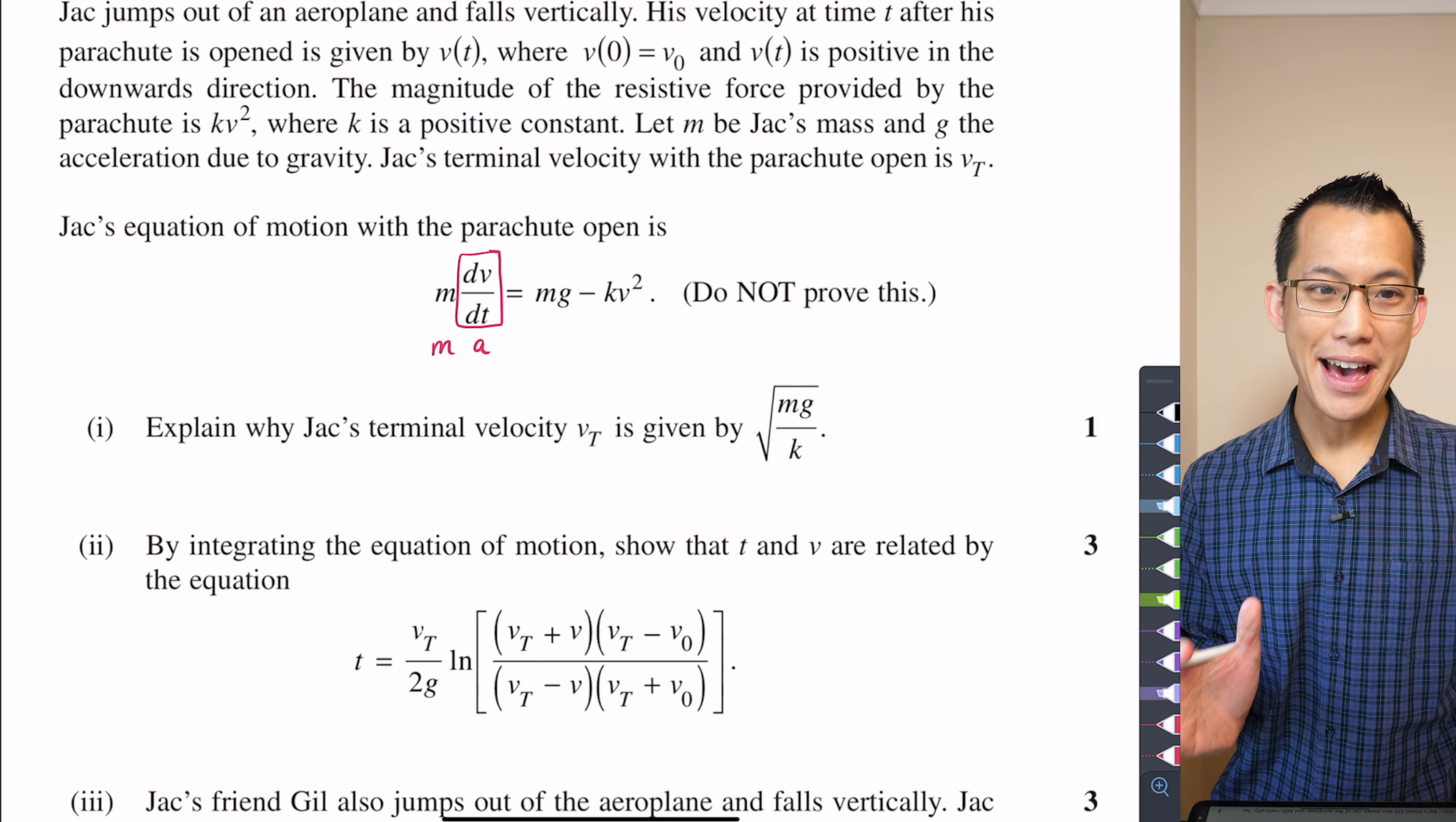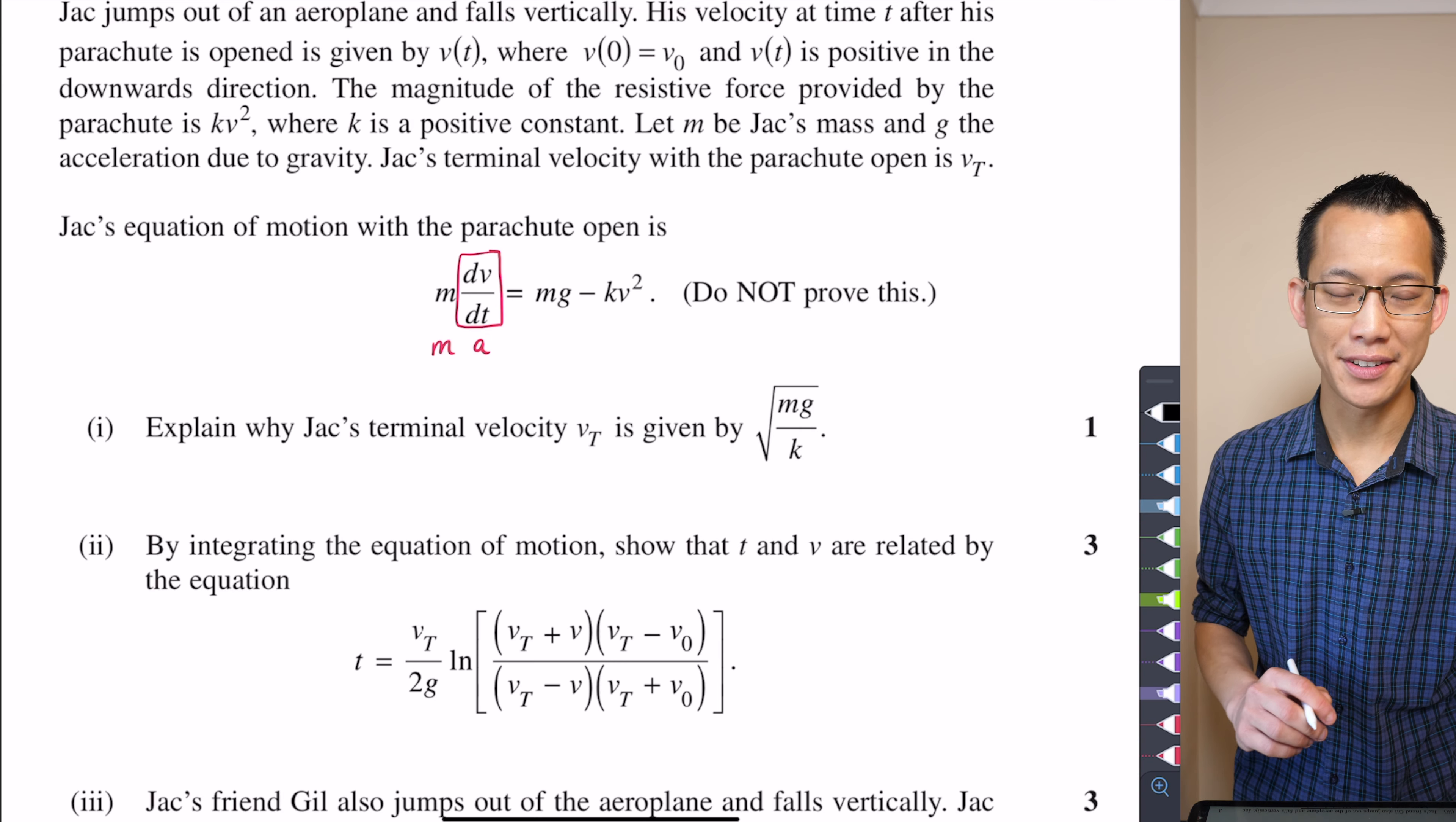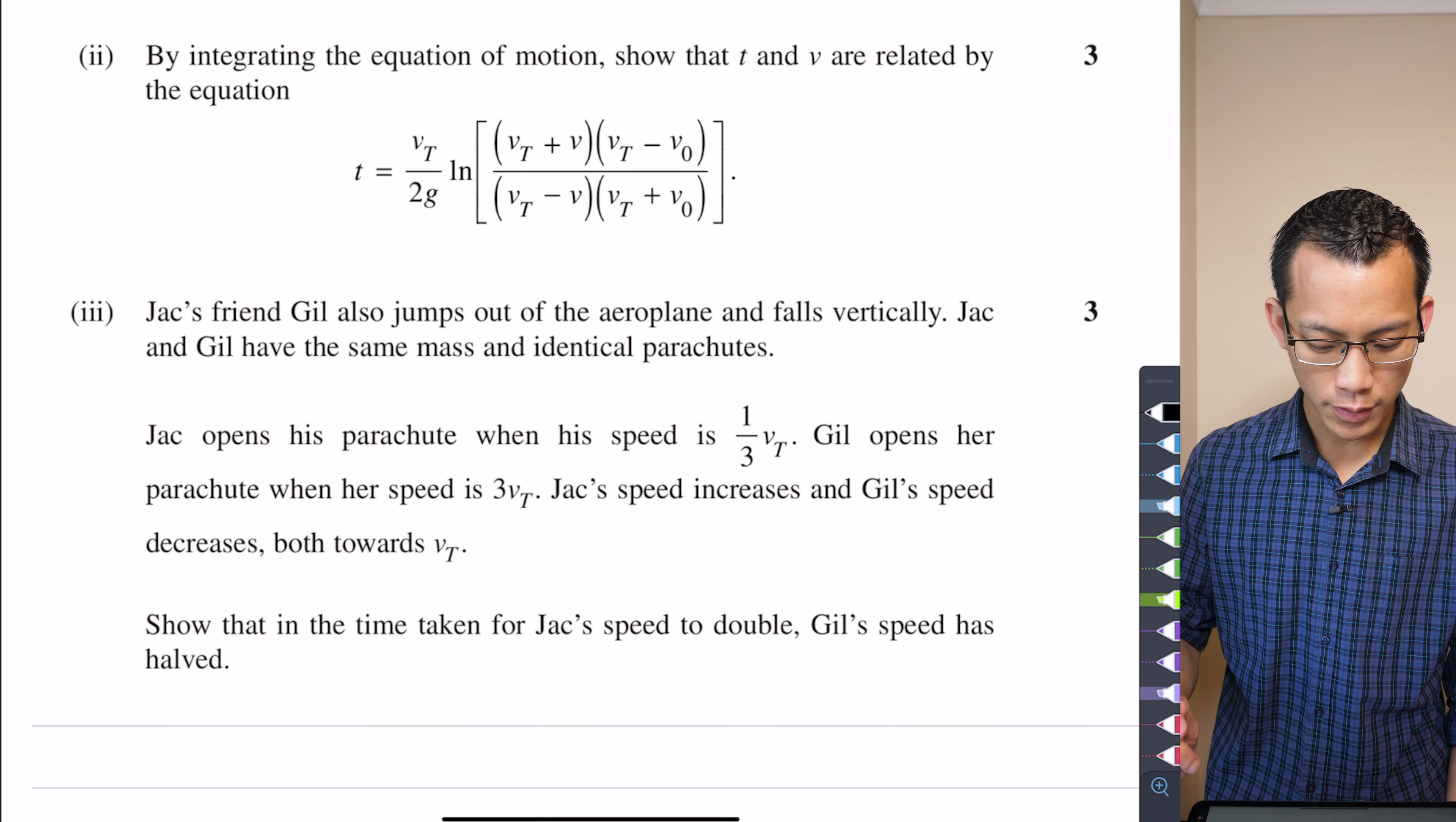So from that, it says, explain why Jack's terminal velocity VT is given by that square root of MG on K. So I think you guys can get that. It'll only take a few lines. My nudge into this question is just for part two.